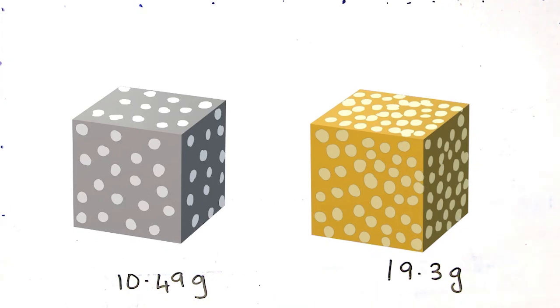Now the difference is obvious. The molecules in the silver cube, these circles represent the molecules, are more loosely packed than the gold. The silver molecules are spaced farther apart from each other. There is more distance between them, whereas the gold molecules are more tightly packed, closer together.